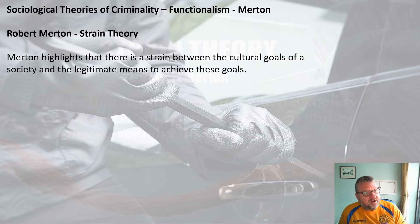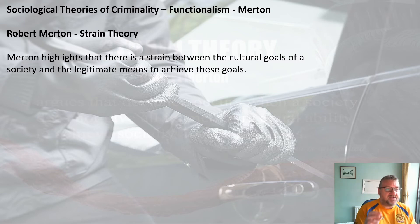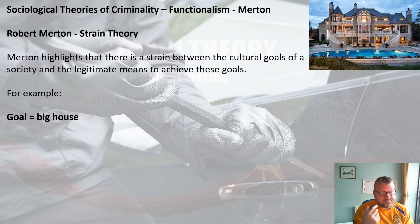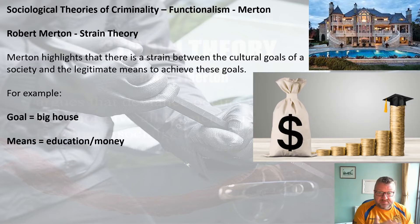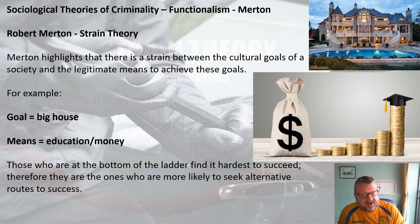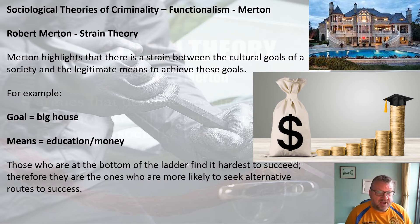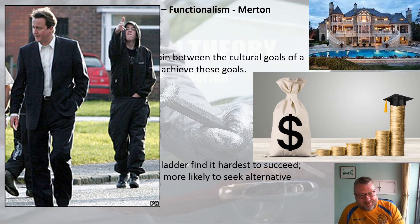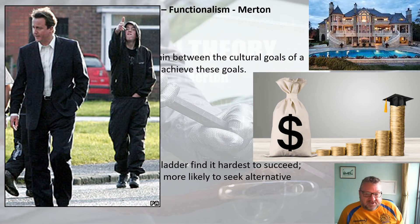Strain theory is particularly related to Western and especially American culture. Merton highlights a strain between the cultural goals of society and the legitimate means to achieve them. For example, the goal might be a big house, and the means would be education leading to money. Those at the bottom of the ladder find it hardest to succeed and are much more likely to seek alternative routes. The image of ex-Prime Minister David Cameron — a multimillionaire — alongside disempowered youth shows the difference between advantage and disadvantage within society.